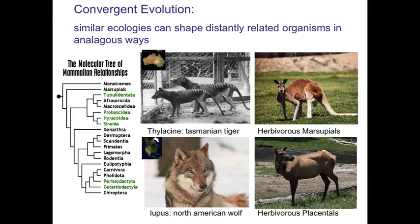If you look at how species are related phenotypically, you can find cases where very distantly related species are similar in surprising ways. For example, if you take marsupials that only live in Australia and compare them to animals that live in North America, like the carnivores, you see very similar species even though they're completely different from one another.